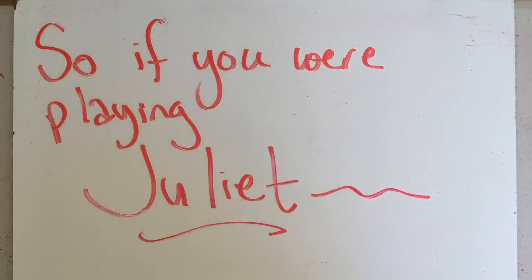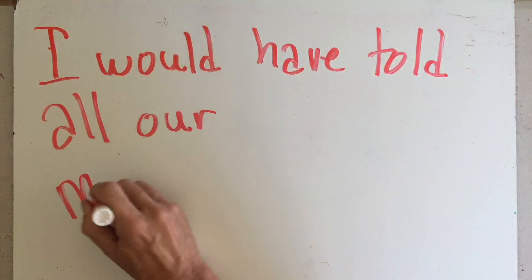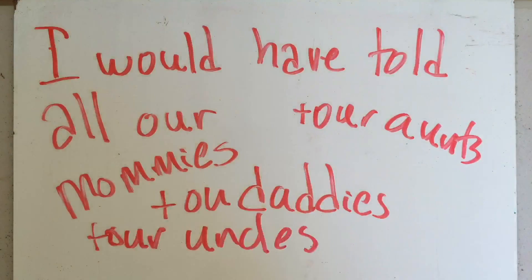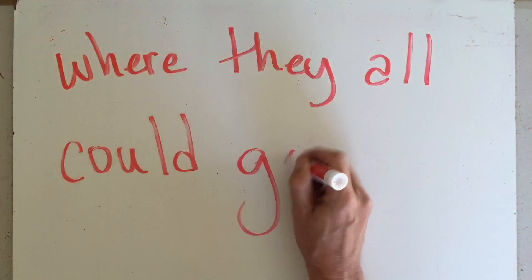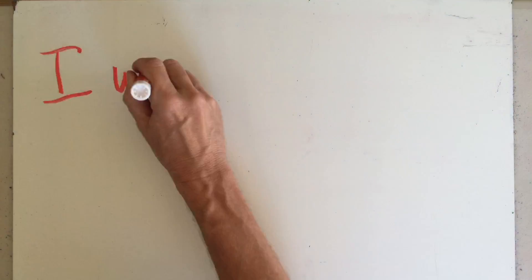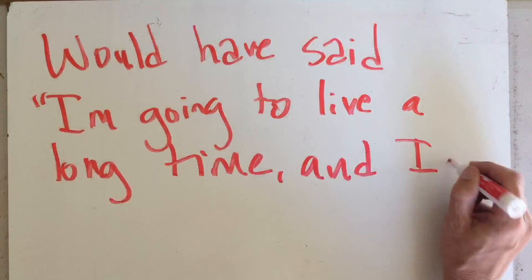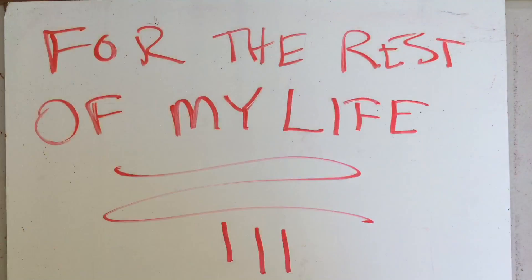So if you were playing Juliet and I were playing Romeo, would've told our mamas and our daddies and our aunts and our uncles where they all could go. Would've never taken out that cup, I would've never let you wet that knife. Would've said I'm gonna live a long time and I'm gonna live with you for the rest of my life.